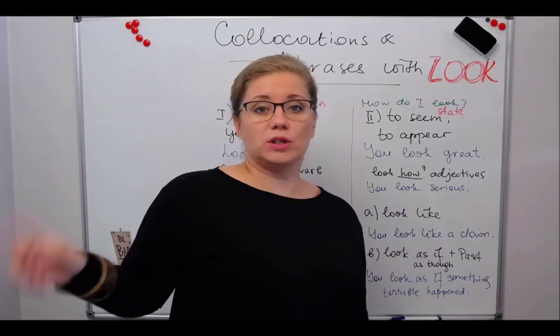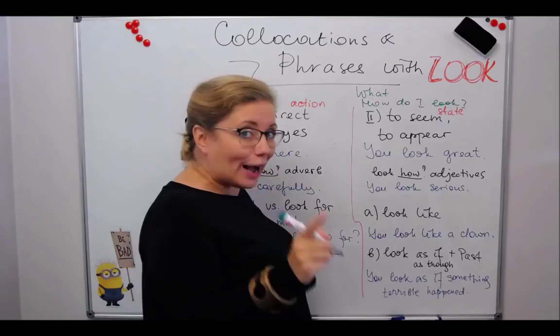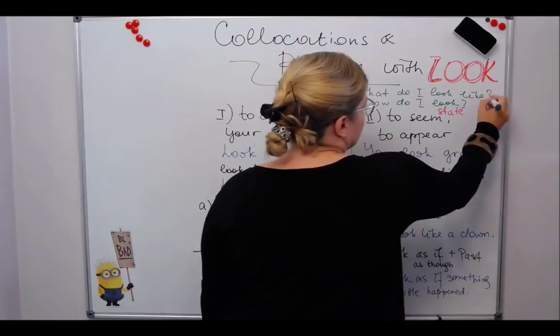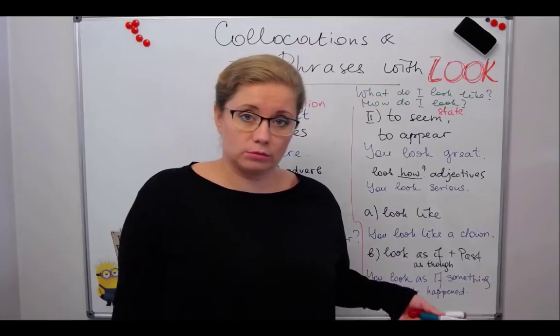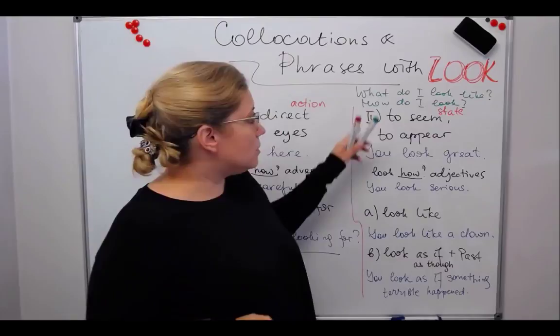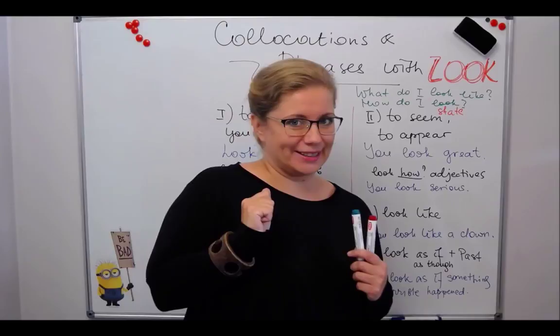You describe constant qualities with 'what.' That's why the correct question about someone's all-time, constant appearance sounds like: 'what do I look like?' This is an unlikely question for yourself, but 'what does he look like?' 'What does she look like?' 'What does your mother look like?' — all the time. 'Is she short? Is she tall?' Don't forget about this difference between 'what' and 'how.' It is one of the most common mistakes in English.